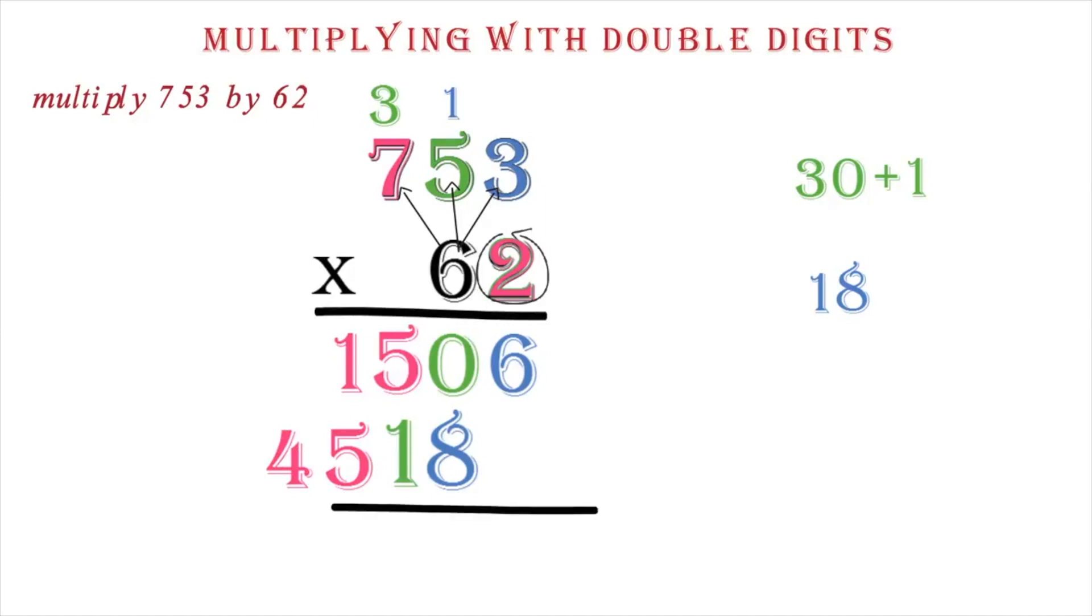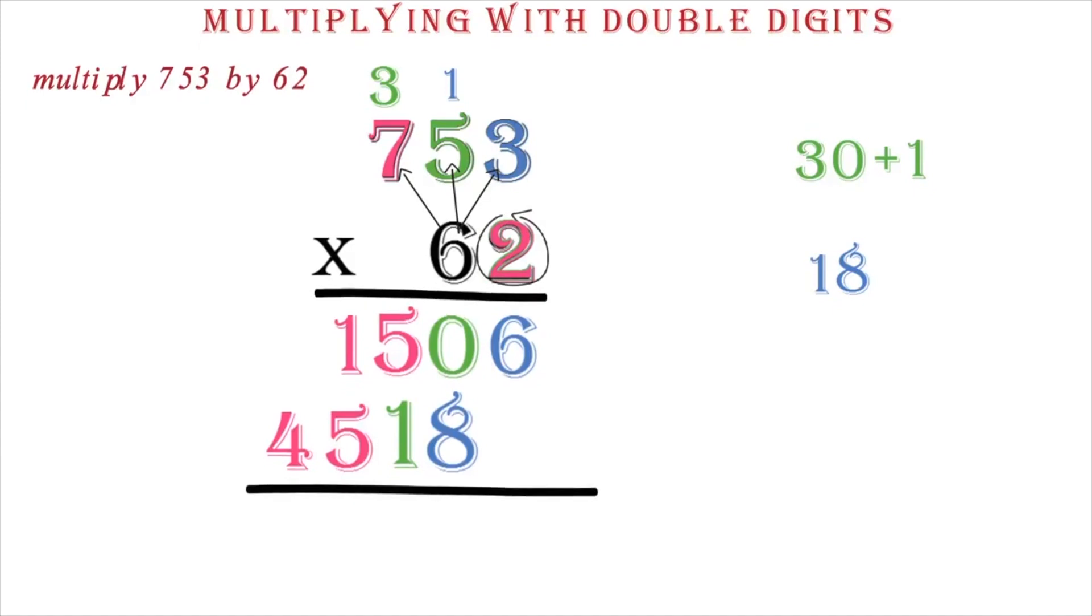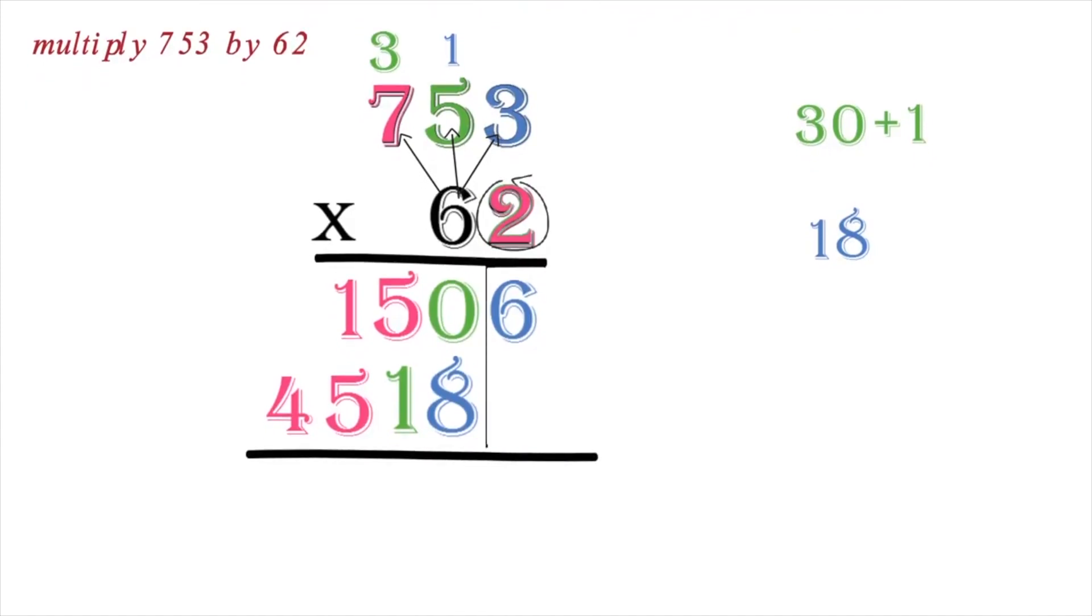Now, the next step will be to add vertically. Since we just have 6 here, we bring it down. Next, we add the 0 and the 8 to get 8. We then add the 5 and 1 to get 6. Finally, since we just have 4 here, we just bring it down. So, this will be our final answer.